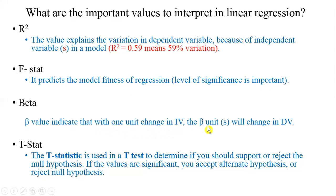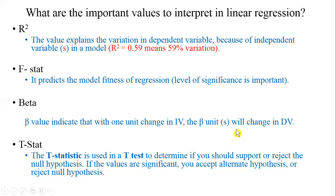The beta value indicates that with one unit change in the independent variable, beta units will change in the dependent variable. For example, if you're measuring the relationship of income with expenditures and you get a beta of 0.50, it means if your income increases one dollar your expenses are going to increase by 0.50 dollars. So with one unit change in the independent variable, whatever value of beta you get, that many beta units will change in the dependent variable.